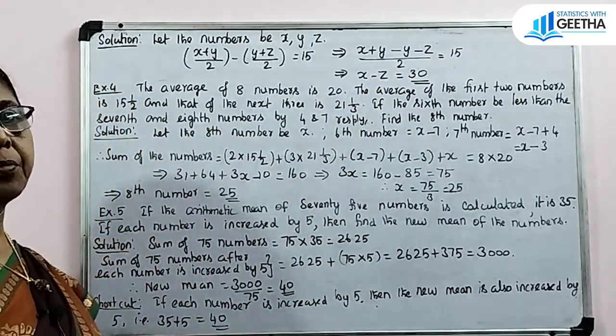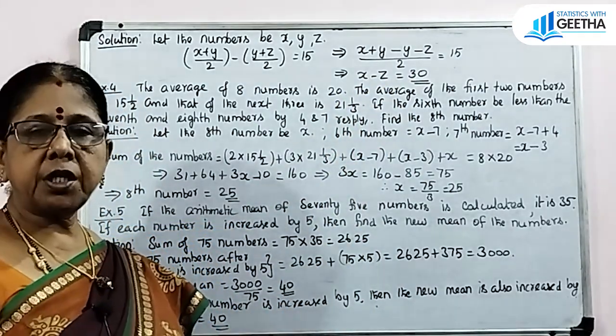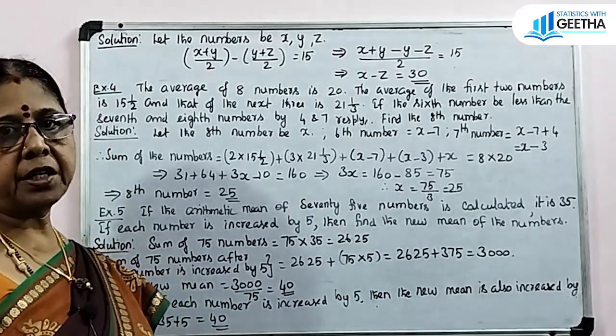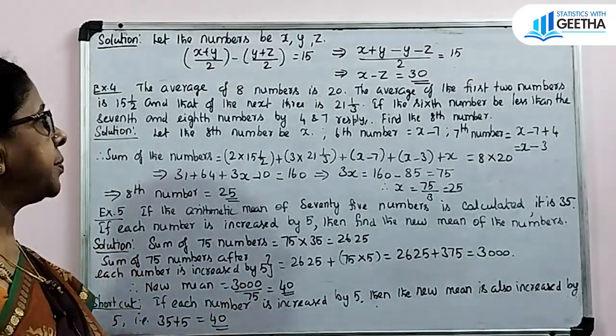Therefore, the difference between the first and third numbers is 30.